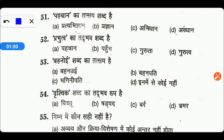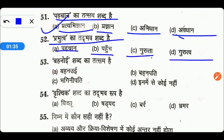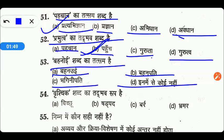First question: the constant meaning of BAD. The options are Pratyabhiyyana, Pragyyan, Avidhan, and Abdhan. Friends, if we talk about the constant meaning of BAD, the right answer is Pratyabhiyyana — option number C.